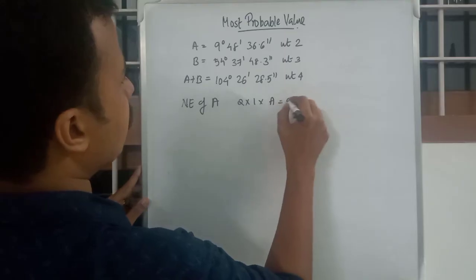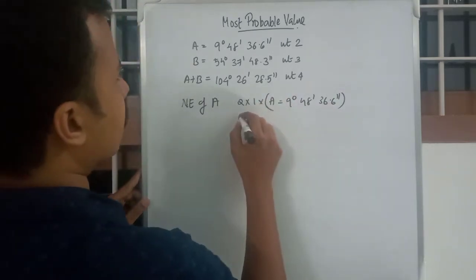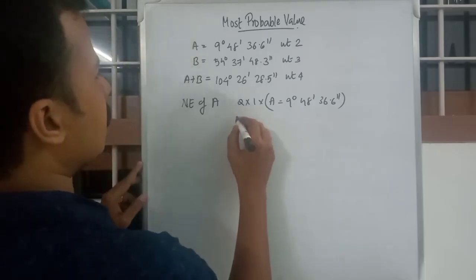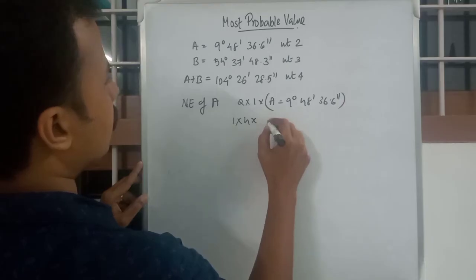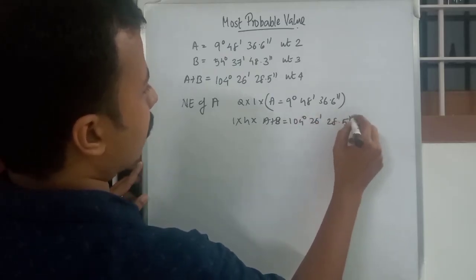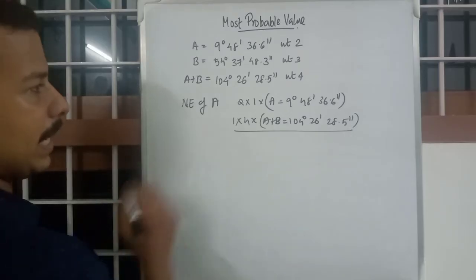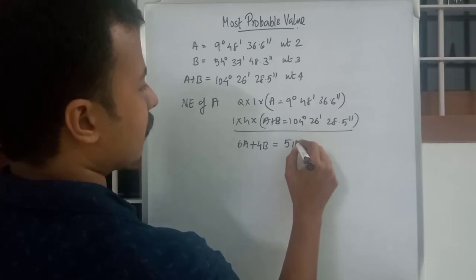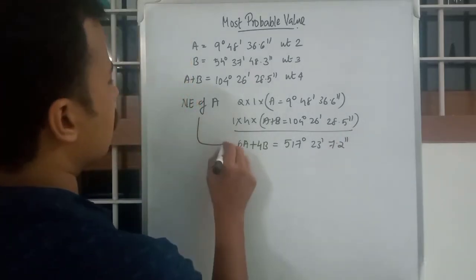So: 2×1×A = 9°48'36.6" for equation one. There is no coefficient of A in equation two, so we skip it. Moving to equation three: the coefficient is 1, weight is 4, so 4×1×(A+B) = 104°26'28.5". Adding these up gives the normal equation of A.